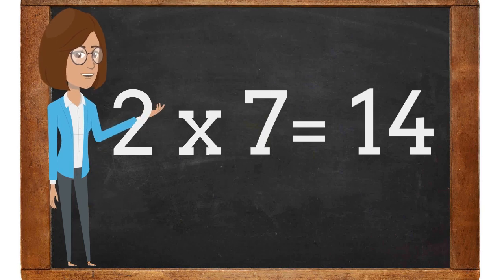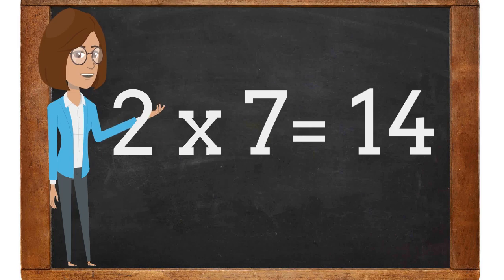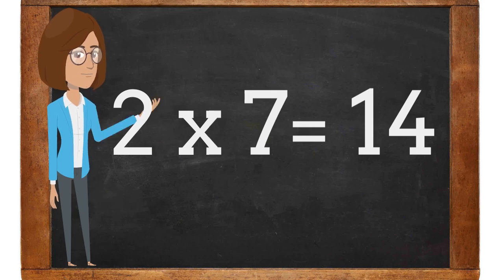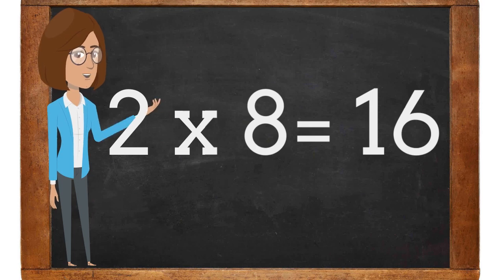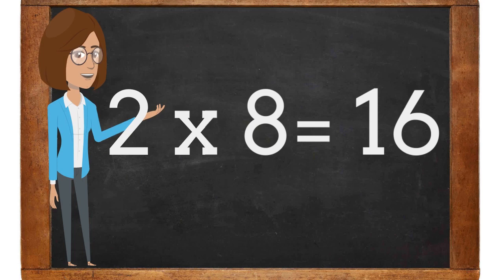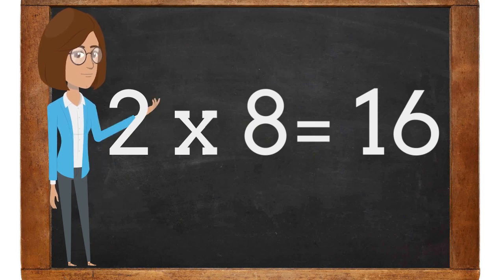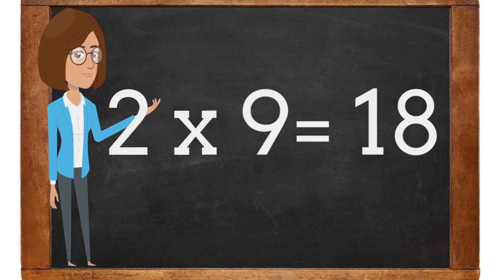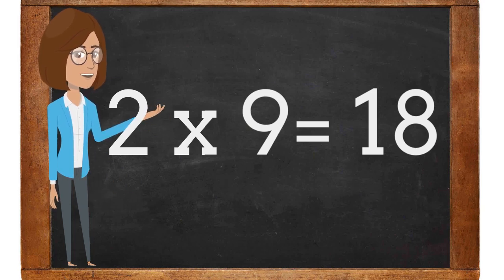2 times 7 is 14. 2 times 8 is 16. 2 times 9 is 18.